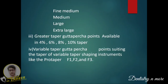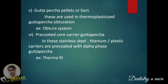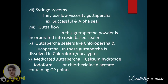Other forms include gutta percha pellets or bars, used in thermoplasticized obturation. Pre-coated core carrier gutta percha uses stainless steel, titanium, or plastic carriers pre-coated with alpha-phase gutta percha — this is Thermafil. Syringe systems use very low viscosity gutta percha to fill root canals. Gutta flow incorporates gutta percha powder into a resin-based sealer. Temporary sealers like chloro-percha and Kloroperka dissolve gutta percha in chloroform or eucalyptol. Medicated gutta percha contains calcium hydroxide, chloroform, or chlorhexidine diacetate.